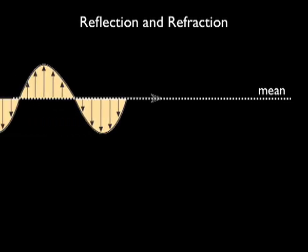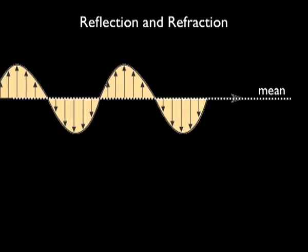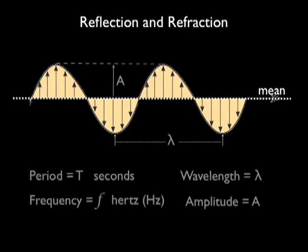Wavelength, the length between successive waves, symbol lambda. Period, the time for one wave to travel the distance of one wavelength, symbol uppercase T.